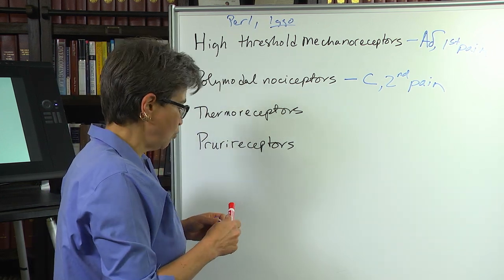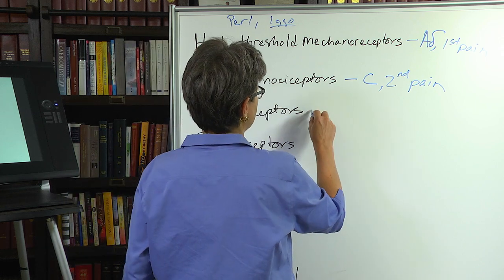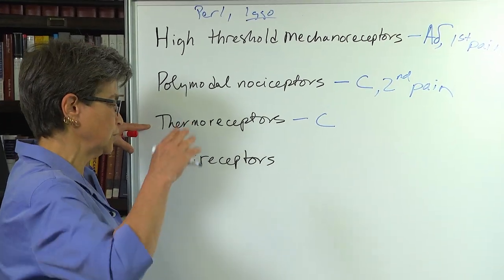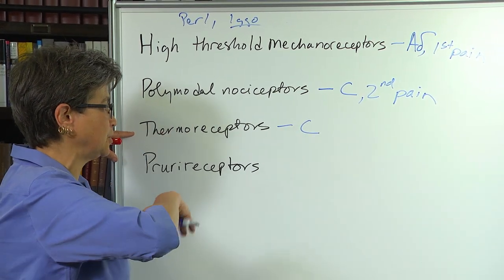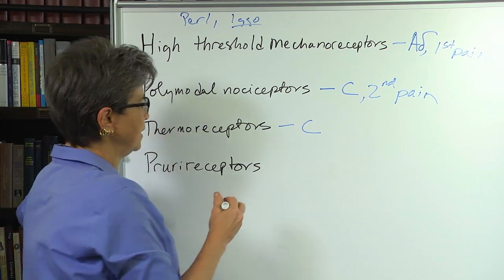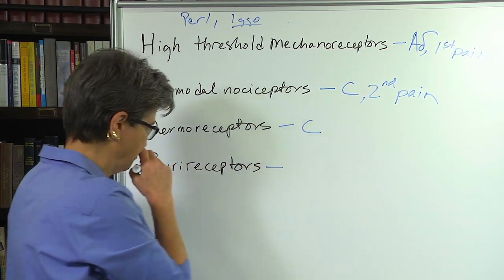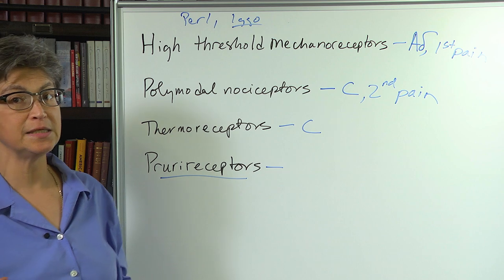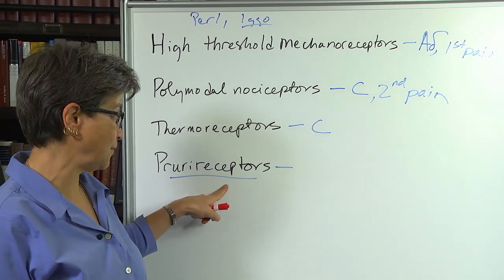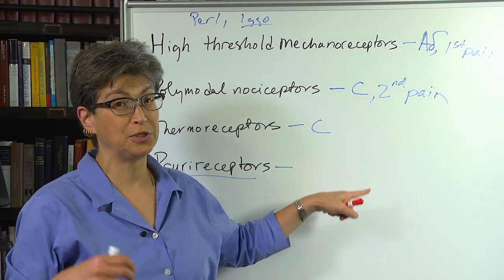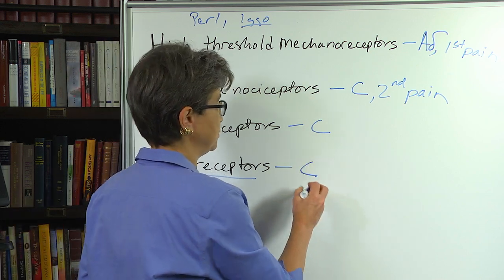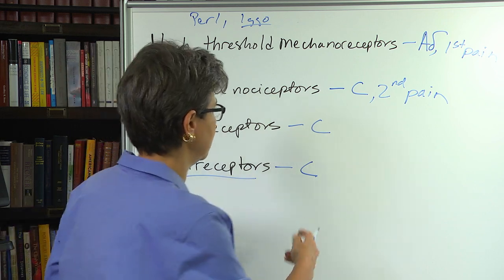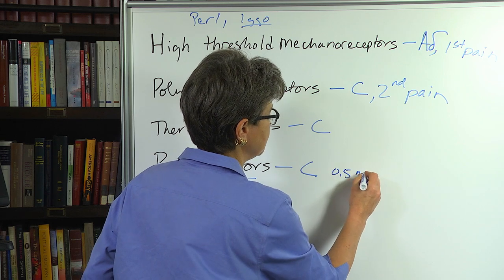There are also a group of thermoreceptors. These are typically C-fibers. These are coding for temperature changes in the non-noxious range. And another type of primary afferent are prurioreceptors. These are responding to, say, histamine. Their activation will lead to a perception of itch. And these are also C-fibers, conducting at around 0.5 meters per second.